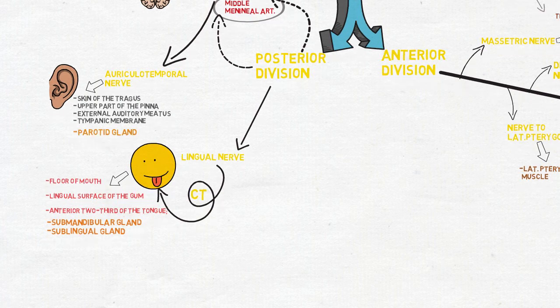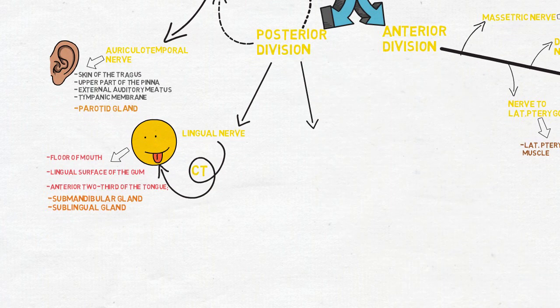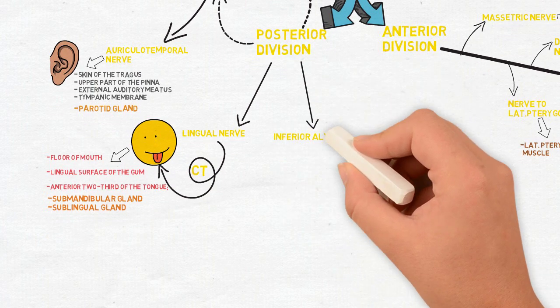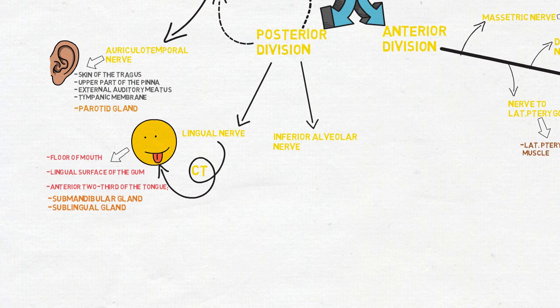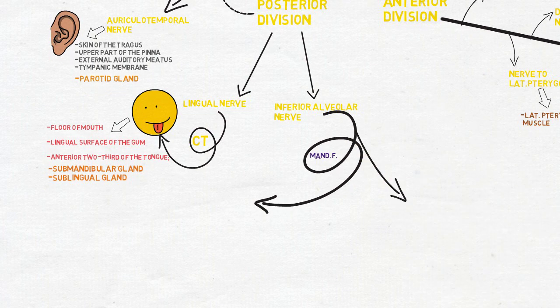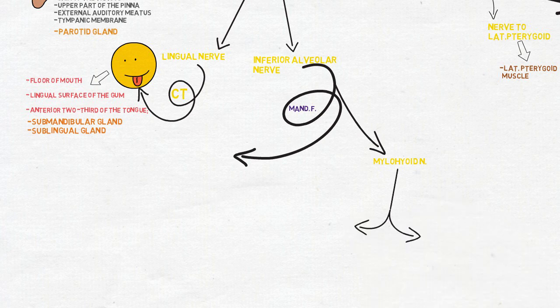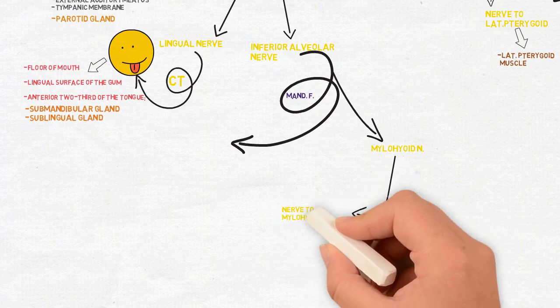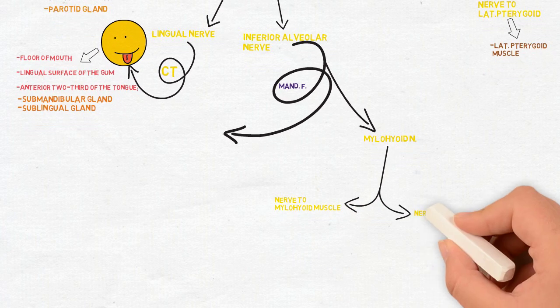The next main branch is the inferior alveolar nerve which is very important regarding dentistry. It passes through the mandibular foramen, before which it gives a mylohyoid branch that supplies the mylohyoid muscle and the anterior belly of digastric muscle.